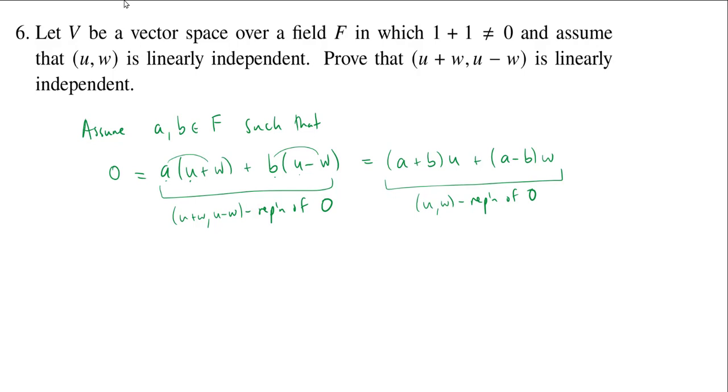What did we know about u and w? Right, the assumption is that (u, w) is linearly independent. And that implies that there is a unique (u, w) representation of 0. Of course, the unique one is the trivial one. So since (u, w) is linearly independent, we conclude that a plus b has to be 0 and a minus b has to be 0.